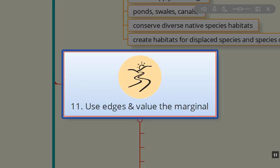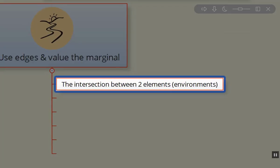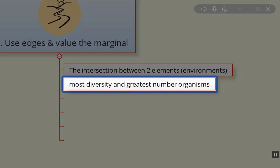Use edges and value the margins. These are the dynamic zones. It's the interaction between two different elements. Let's say a woodlot and a meadow or a pasture zone. So that margin, that transition zone between those two areas is the most diverse and has a greatest number of organisms. It not only has the organisms from the species from the woodlot, it has the species from the pasture or from the meadow, but it also has a unique set of species right there in that marginal zone. So you get the benefit of all three there.